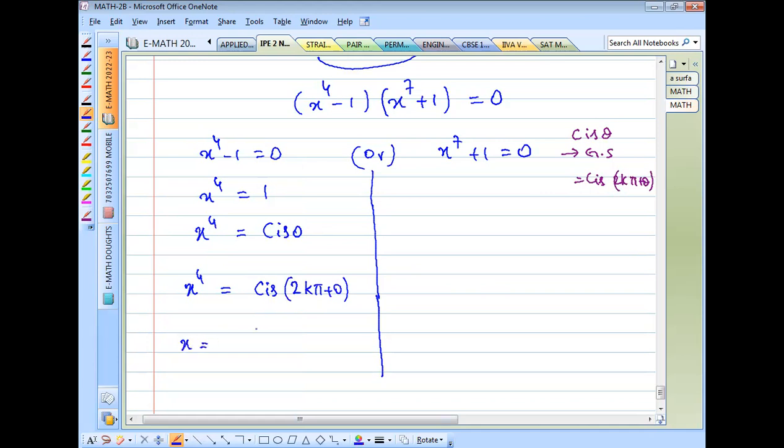For x values, since x power 4 equals 1, x equals cis of 2kπ. Taking the fourth root, x equals cis of 2kπ over 4, which is cis of kπ over 2. Now let's talk about k values.